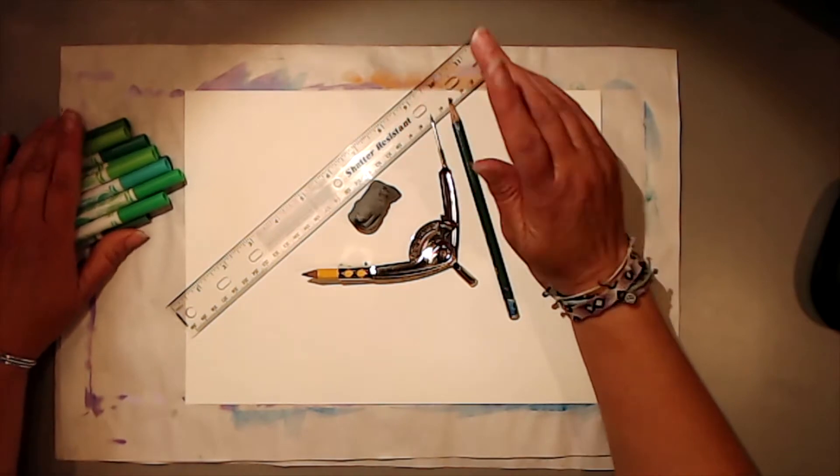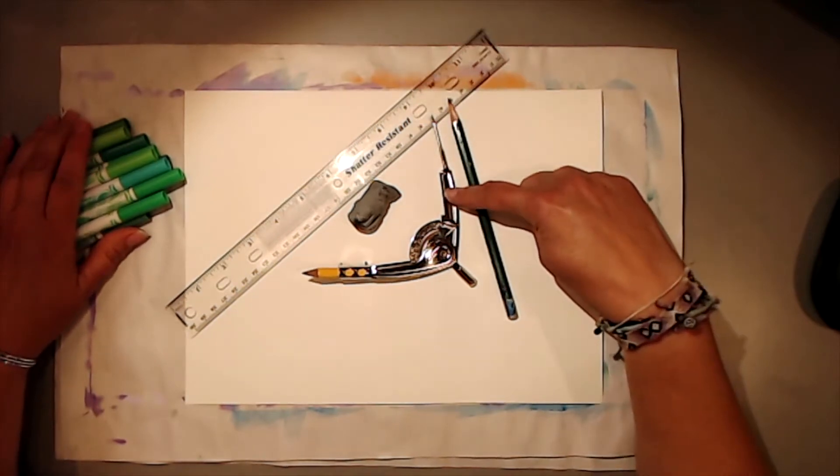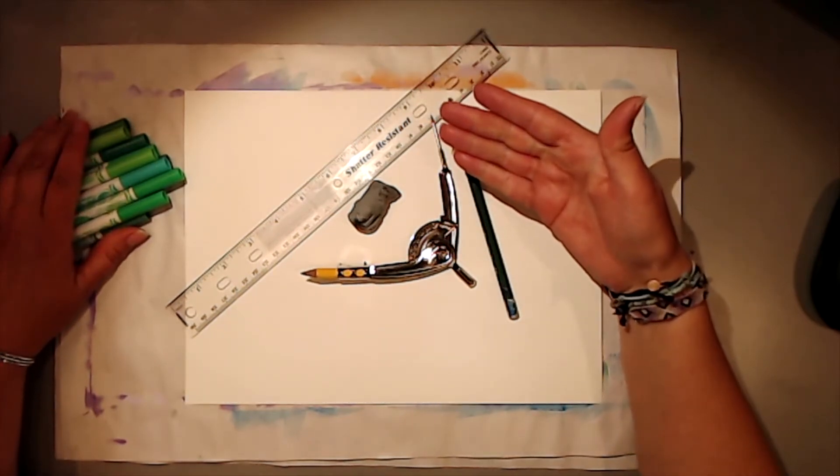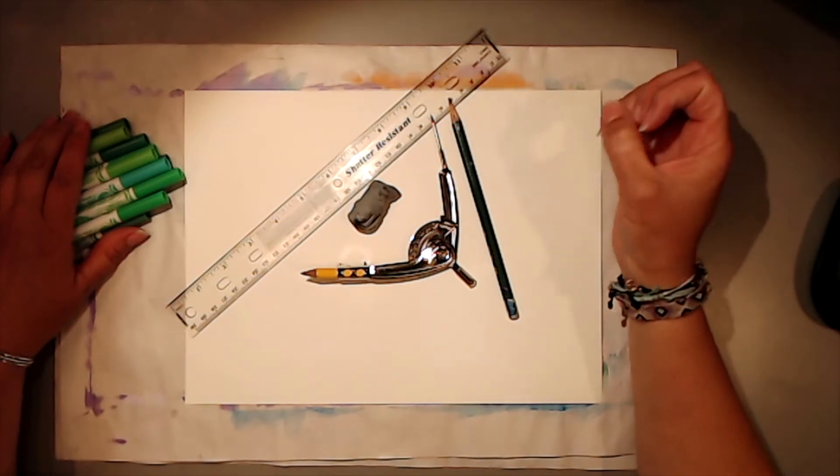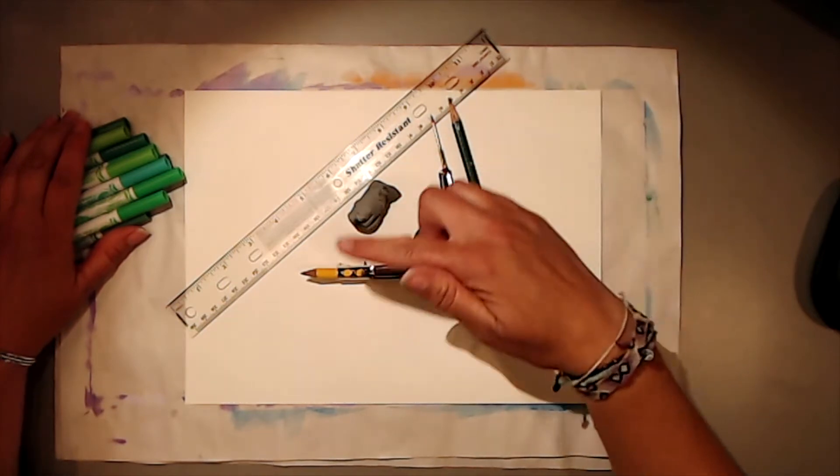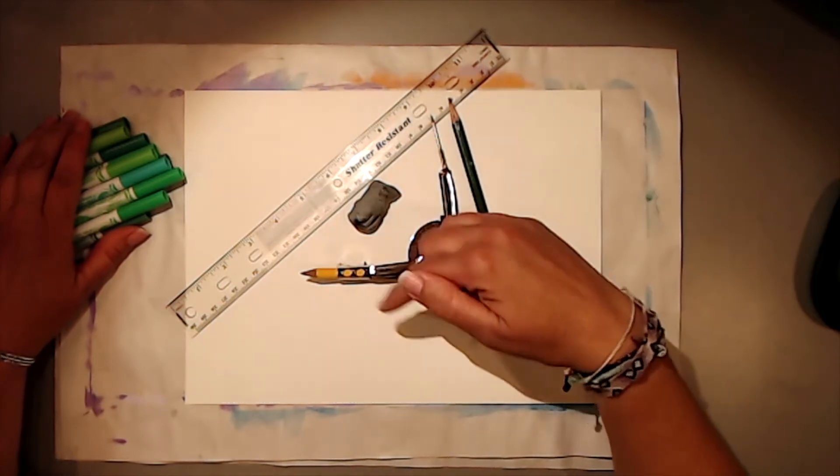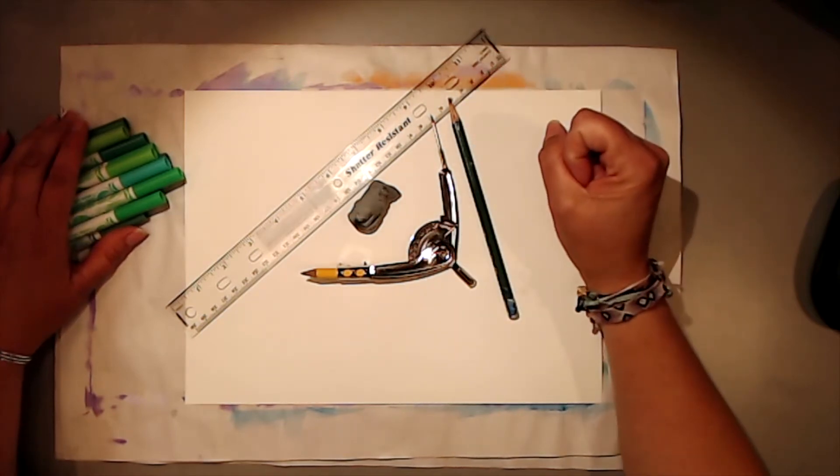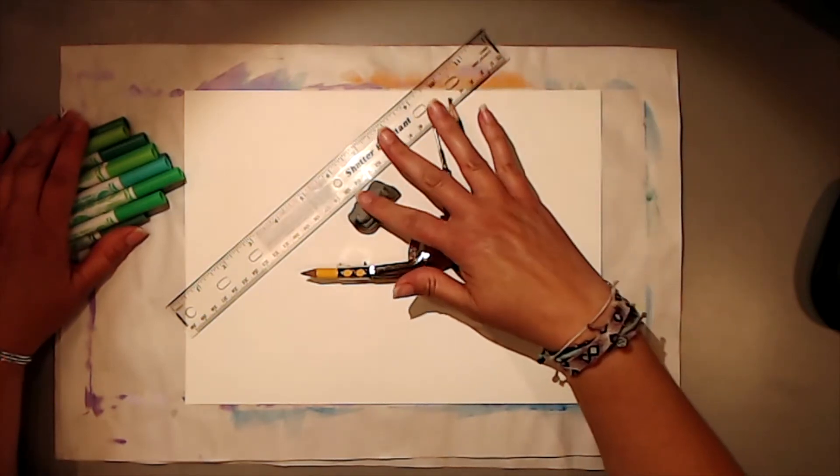And then if you have a ruler and a compass, if you don't have a ruler and a compass, you can use a cup or a bottle to trace or plates to trace circles, or you can just draw them freehand. And a pencil and an eraser.